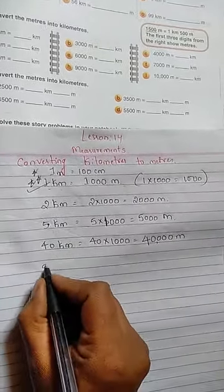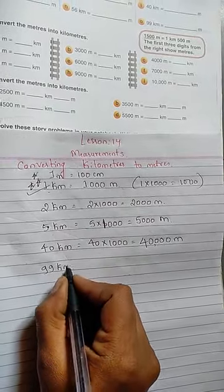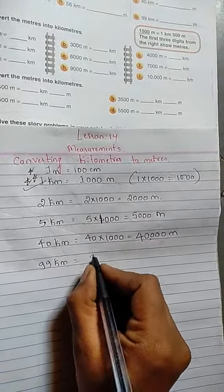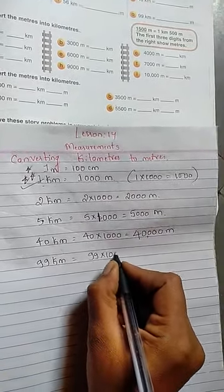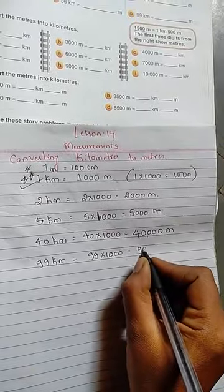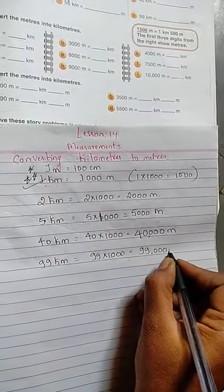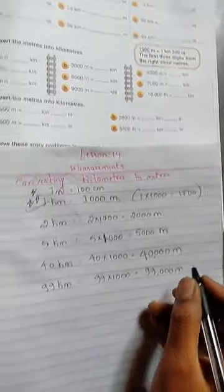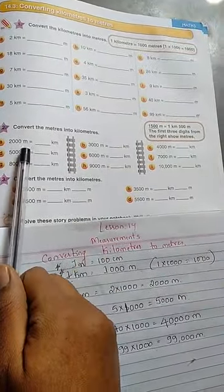Suppose if it is 99 kilometers: 99 into 1000, that will be 99,000 meters. This is how we have to convert the remaining problems also.